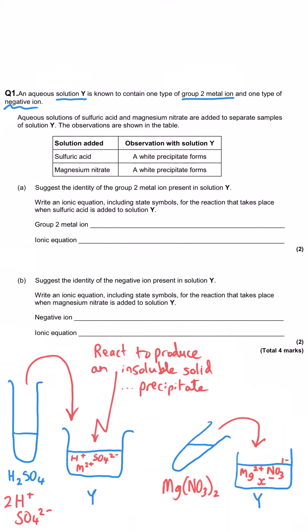There are two parts to this question, both worth two marks. The first part asks you to suggest the identity of the group 2 metal present, and then write an ionic equation including state symbols for the reaction that forms the white precipitate. You need to know that sulfuric acid contains sulfate ions, and that when you mix a metal 2+ ion with sulfate ions you get a white precipitate — particularly for barium, and possibly strontium.